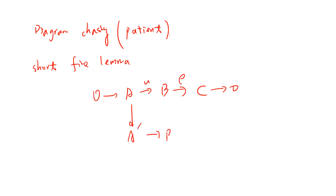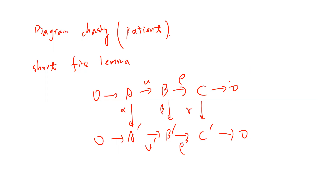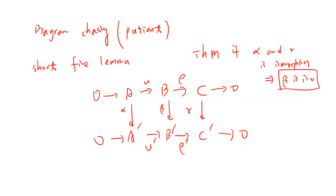Suppose you have two short exact sequences: zero → A → B → C, and the maps between them called α, β, γ, with μ, ρ and μ prime, ρ prime. The theorem says that if α and γ are isomorphisms, then β is an isomorphism. To prove this we need to prove two facts: first that β is injective, and second that β is surjective.